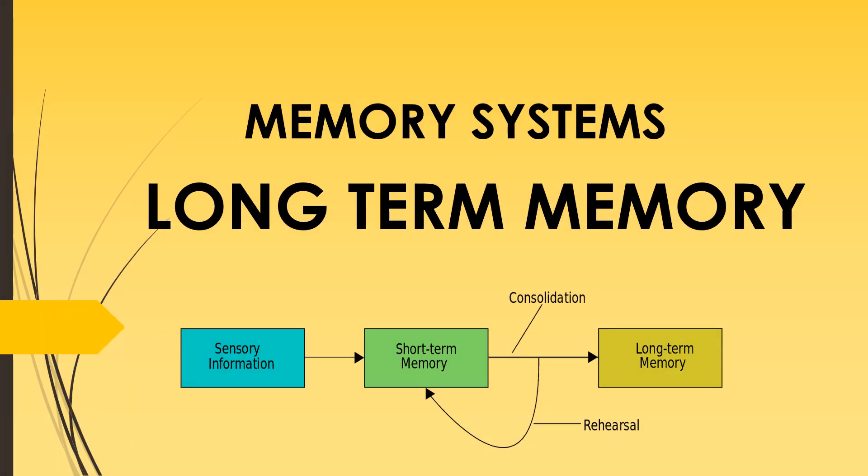Memory systems — long-term memory. Long-term memory is responsible for the storage of information in the brain for a longer period of time, limited only by the length of life. It seems that human long-term memory storage capacity is limitless. Long-term memory is the final stage in the processing of memory; the first two stages are sensory memory and short-term memory, which we have learned in previous videos.